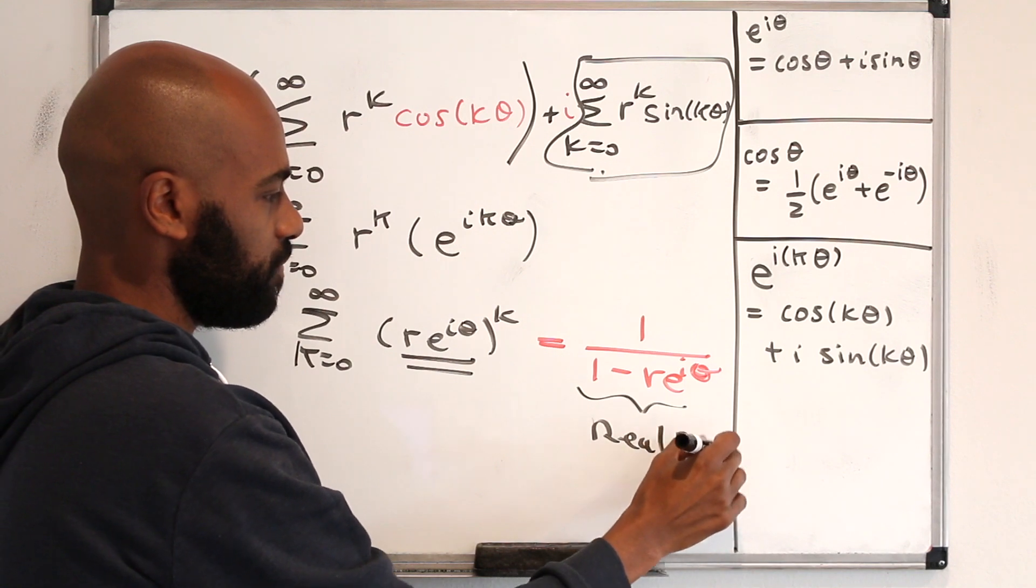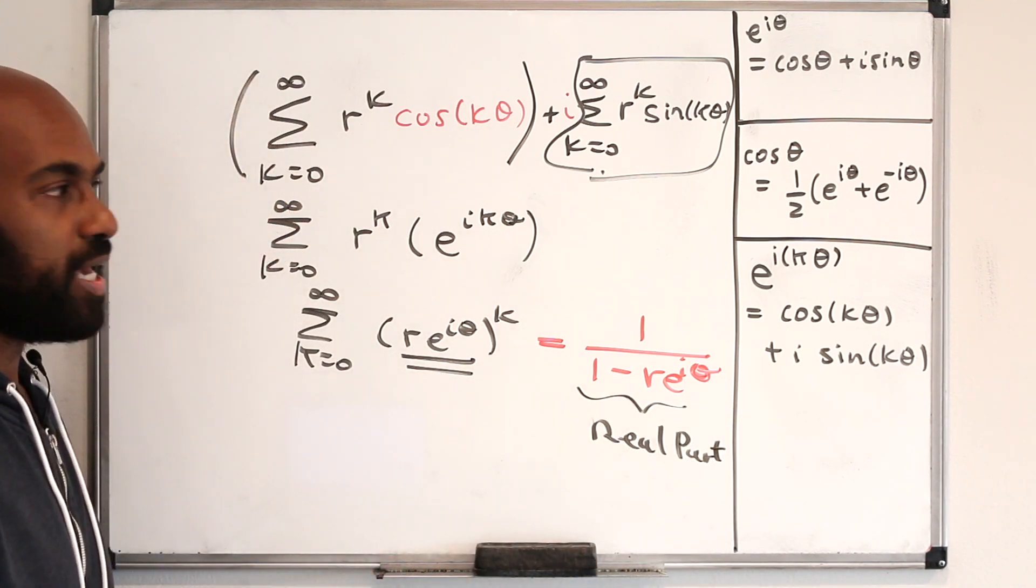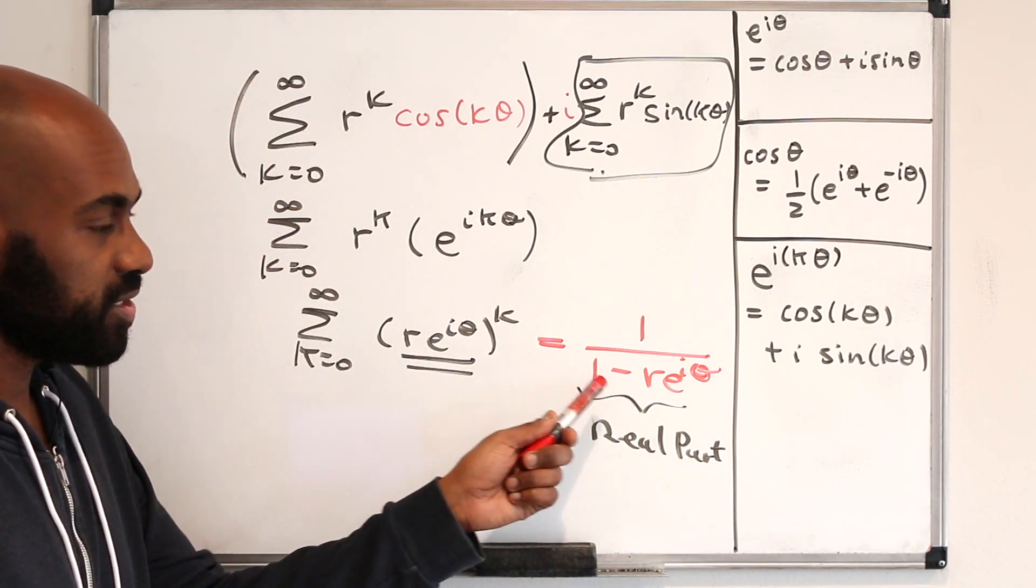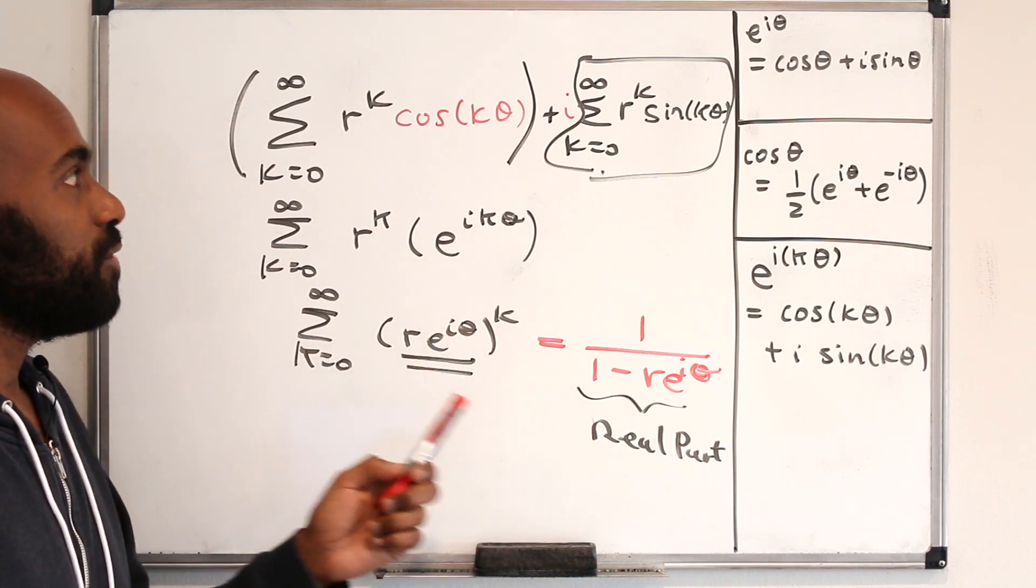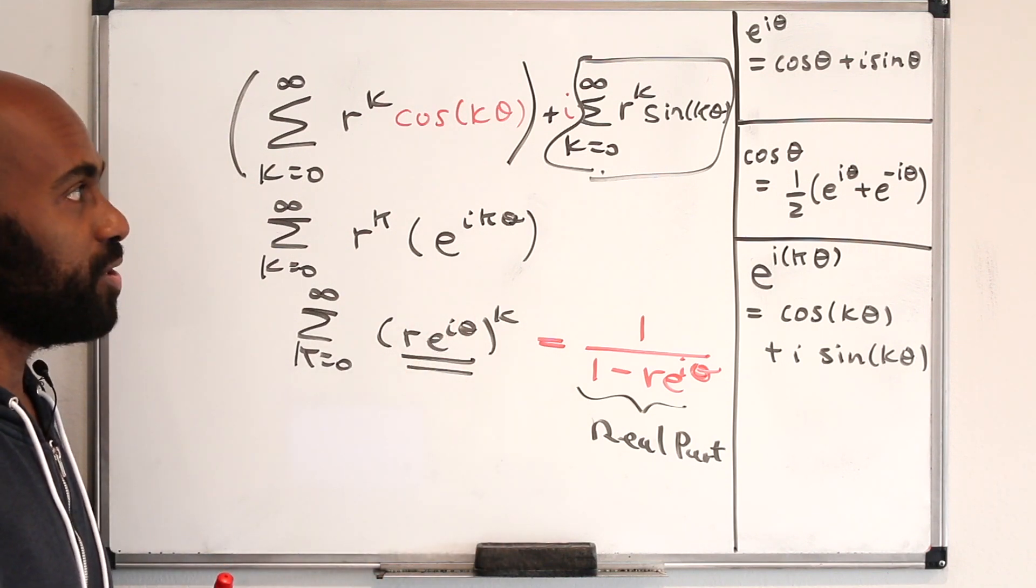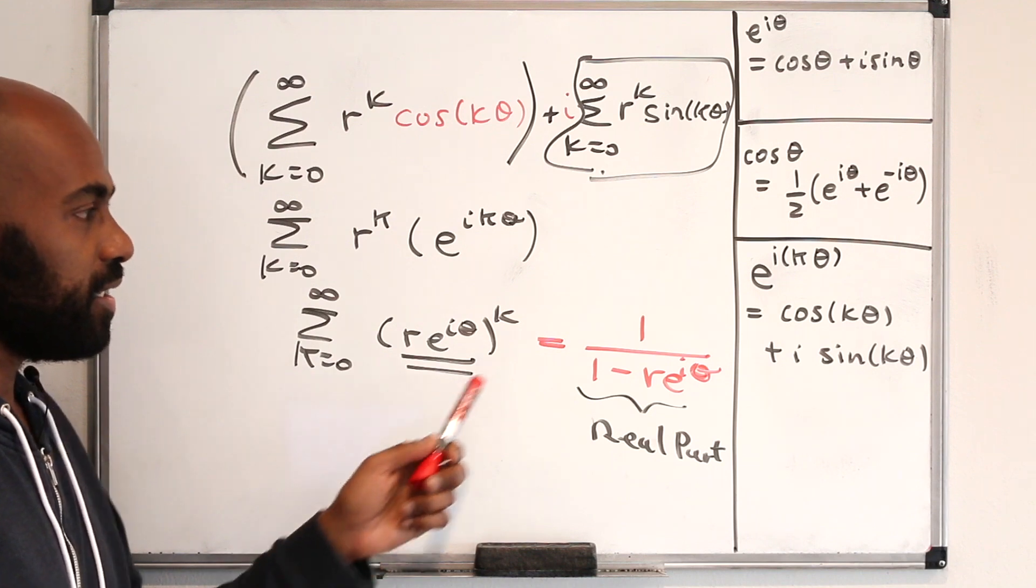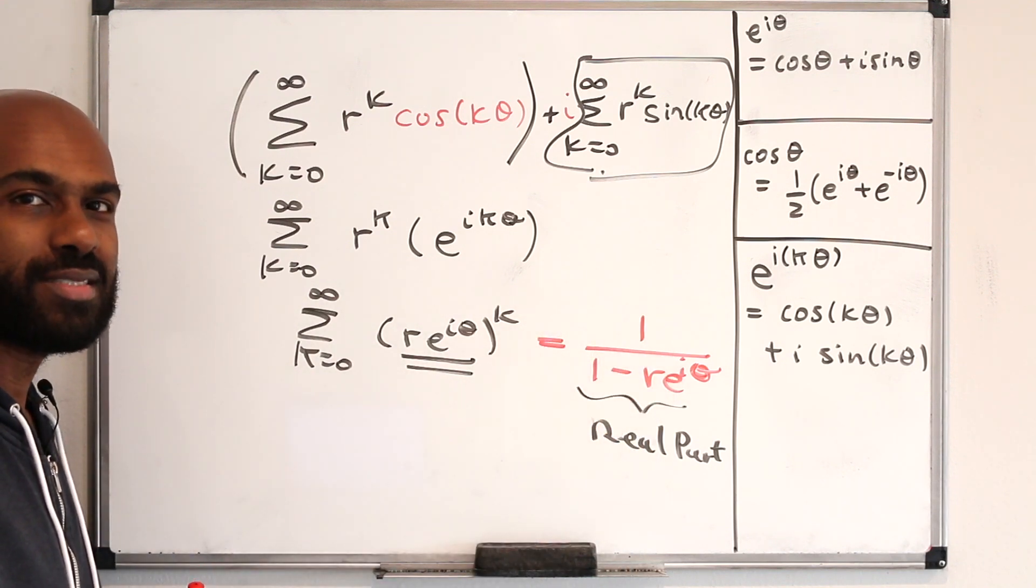So another way to word the thing that we're actually interested in finding is that it's the real part of this number right over here. So that's the thing we should investigate. What is the real part of this? As soon as we have the real part of this, we get exactly the answer to the sum that we're interested in. So we're going to clear this, and let's play around with this to figure out what this real part is.